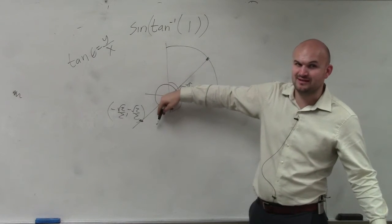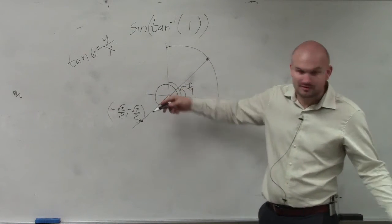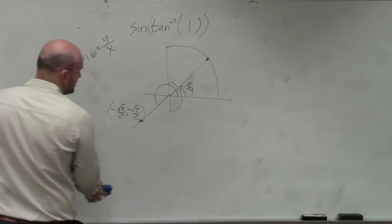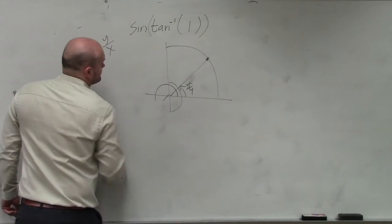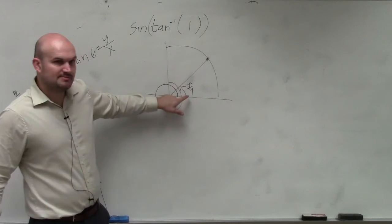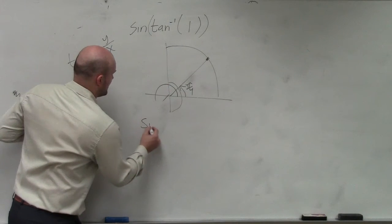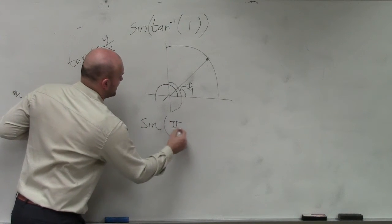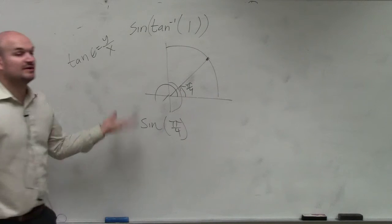If that's 4 pi over 4, this would be 5 pi over 4, right? Or 225 degrees. So the tan inverse of 1 is pi over 4. So now we have the sine of pi over 4. Can we figure out the sine of pi over 4?